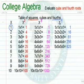Finally, we have x to the fourth. Starting with 1, then 16, 81, 256, and 625.